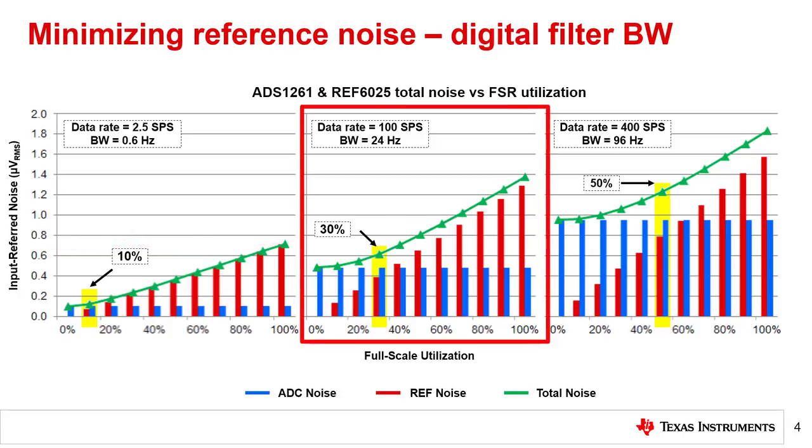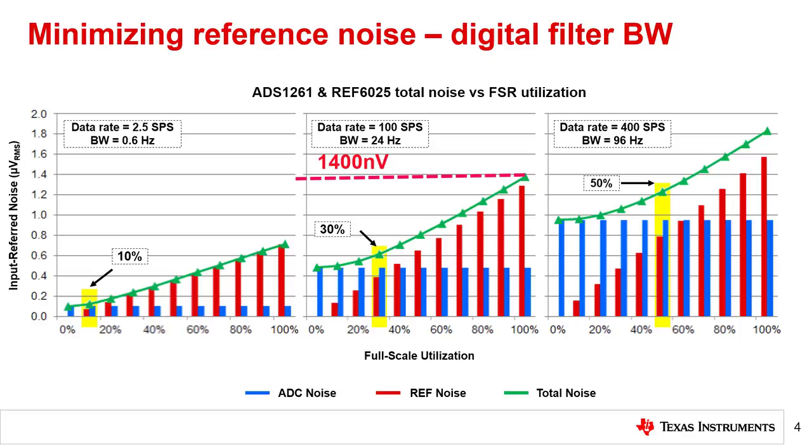Compare that to the middle plot that shows the total noise approximately doubling to 1400 nanovolts RMS at full scale for 24 hertz bandwidth at 100 samples per second.